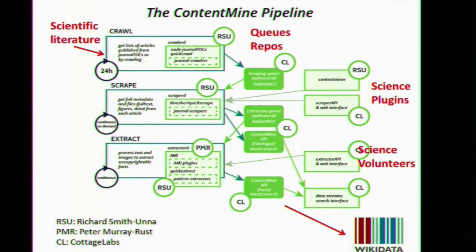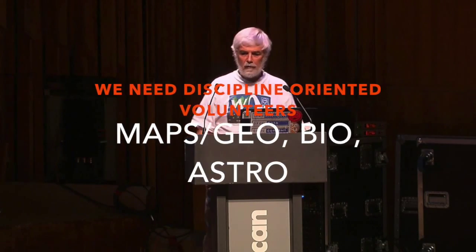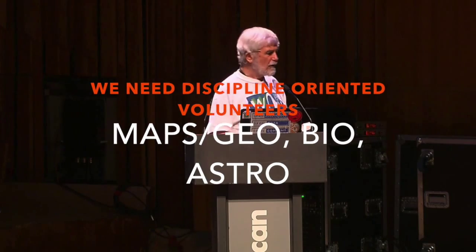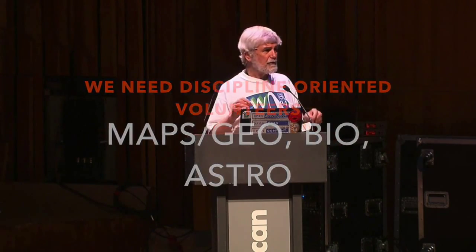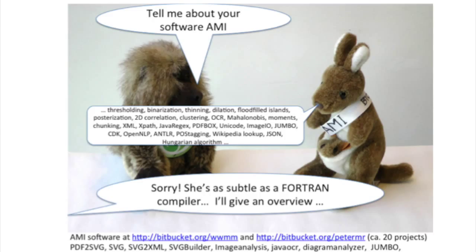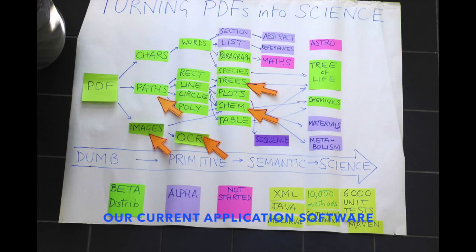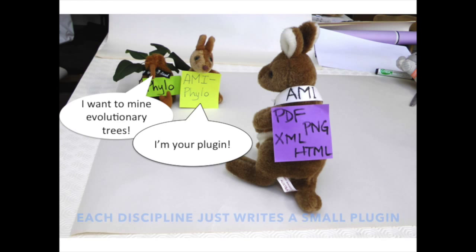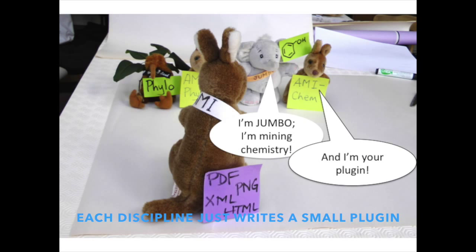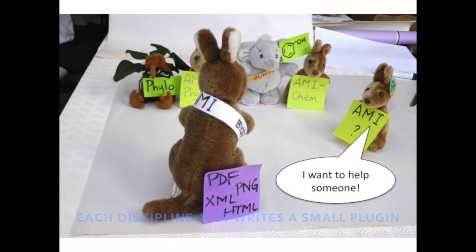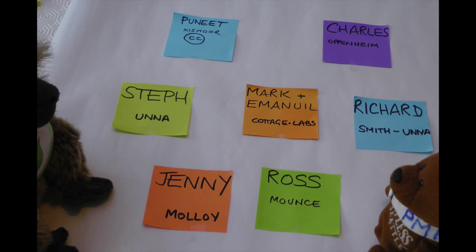What we need is more science plugins. I've written a chemistry one and a phylogenetic tree one. We need people to do maps, birds, and stars. This is our application software — what we've been concentrating on and what we're immediately going to do. It's based on a plugin architecture, so every discipline can create a plugin specifically for its needs.